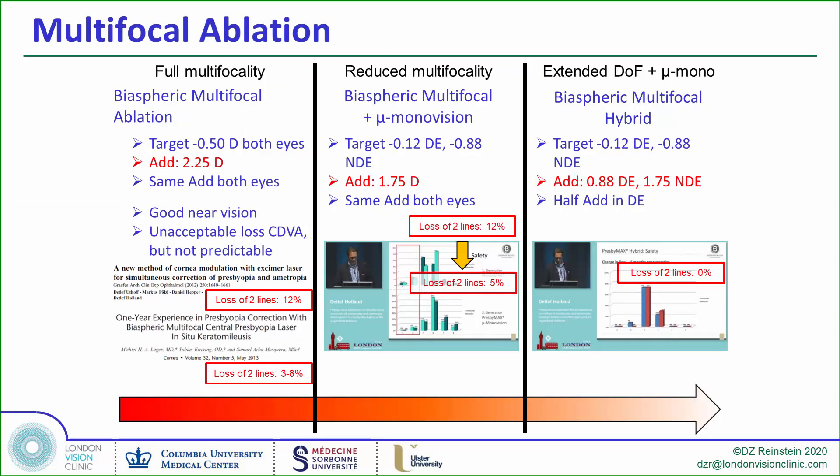Multifocal corneal ablations have been around since the early 90s, but the latest system uses a biaspheric multifocal corneal target surface, originally performed in both eyes. But because of poor safety and contrast, several iterations have come since then to reduce the multifocality and increase the anisometropia between the eyes to provide the range of vision. The use of these profiles is still quite limited due to loss of contrast and reduction in quality of vision, particularly at distance and at night.